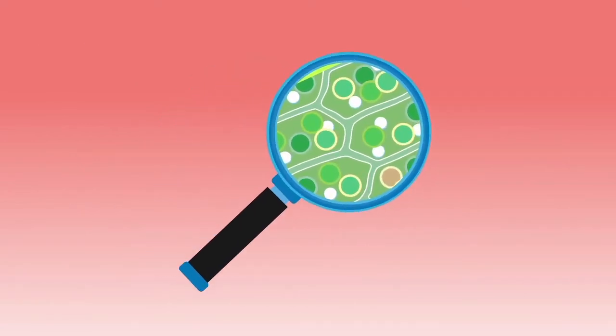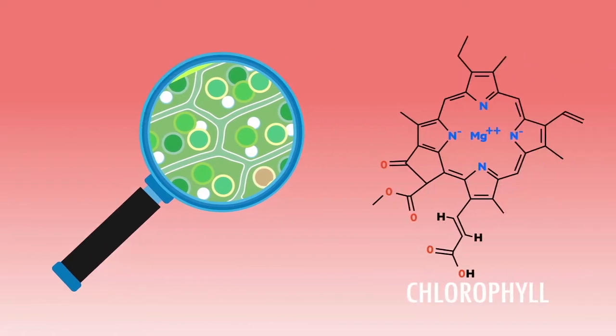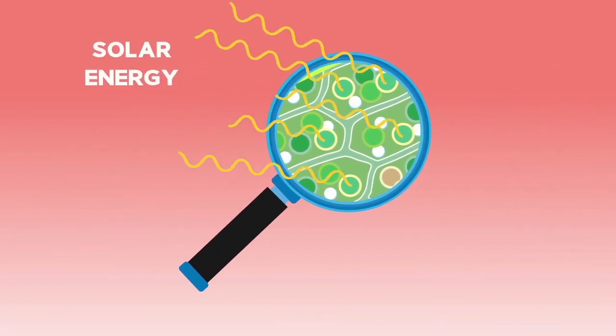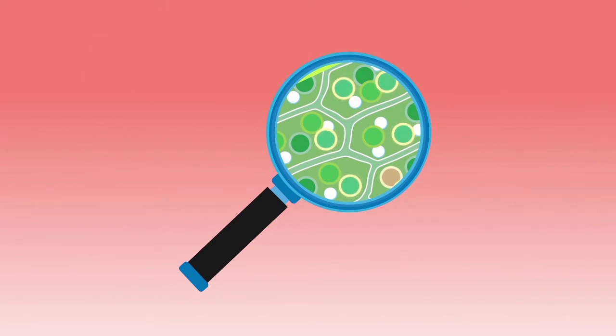Plants have a very clever molecule called chlorophyll that is very good at taking energy from the sun and converting it to chemical potential energy.